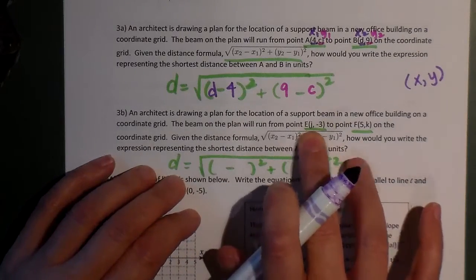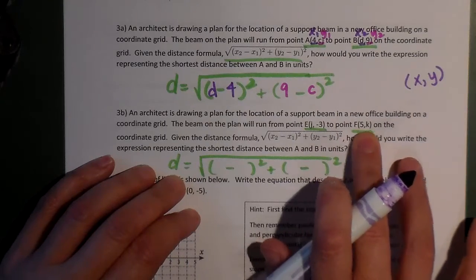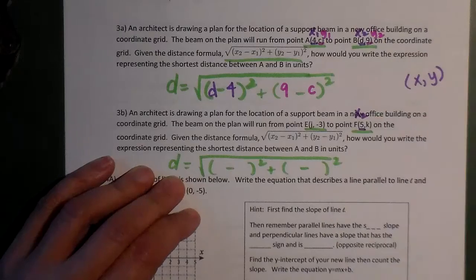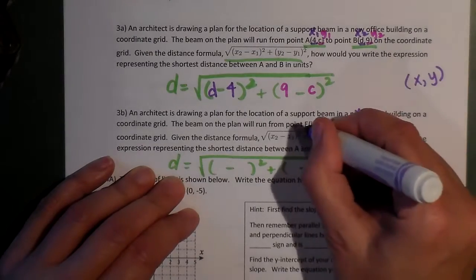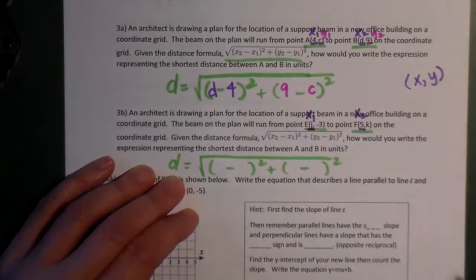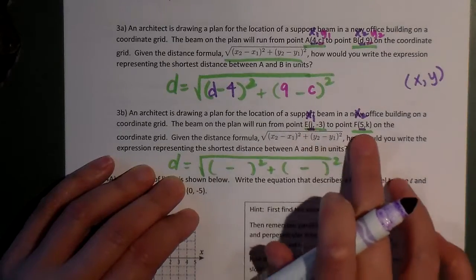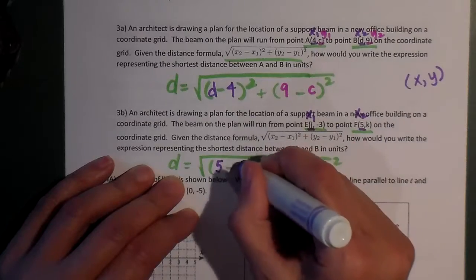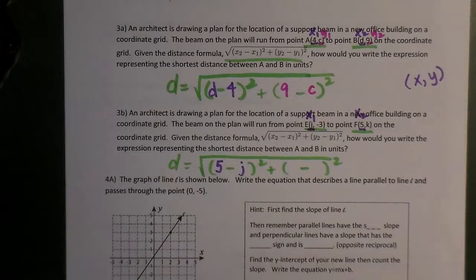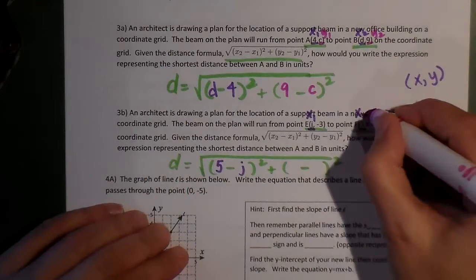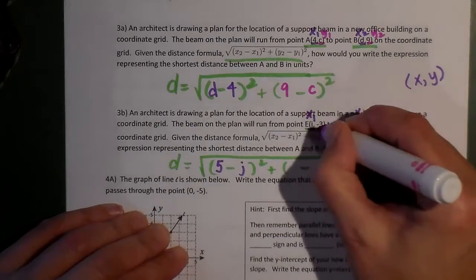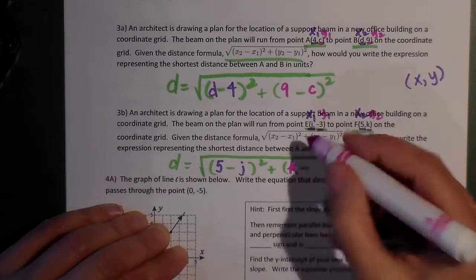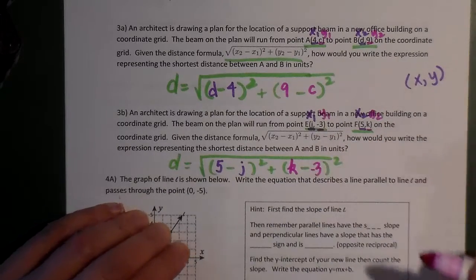They call this X1 and X2 and that Y1 and Y2. This is an X coordinate, and I call it X2 because it's the second one listed. Don't get those mixed up. Make sure those two go together. So 5 is X2, J is X1. Then K is Y2, and negative 3 is Y1. You're done.